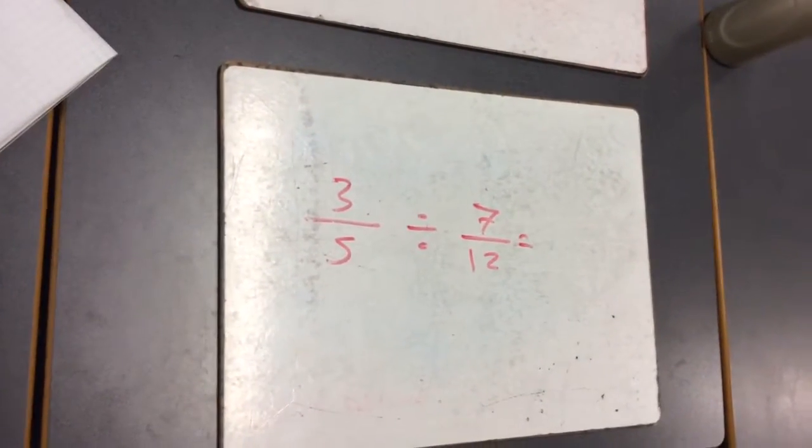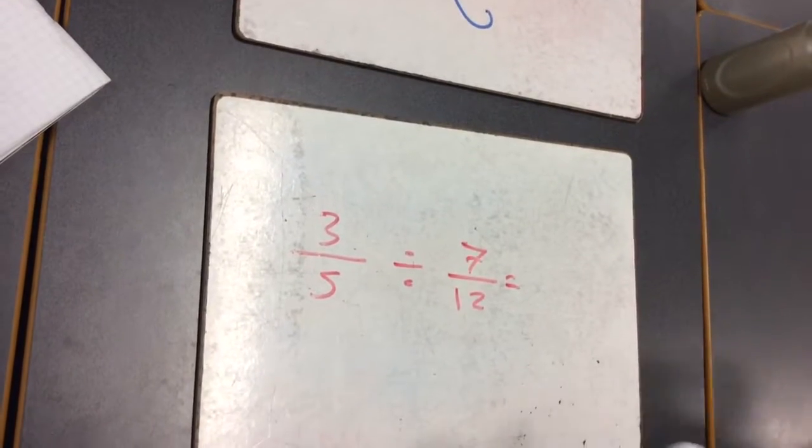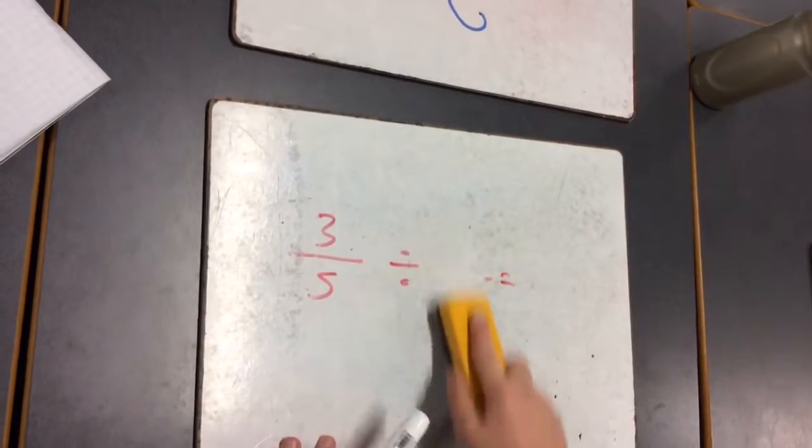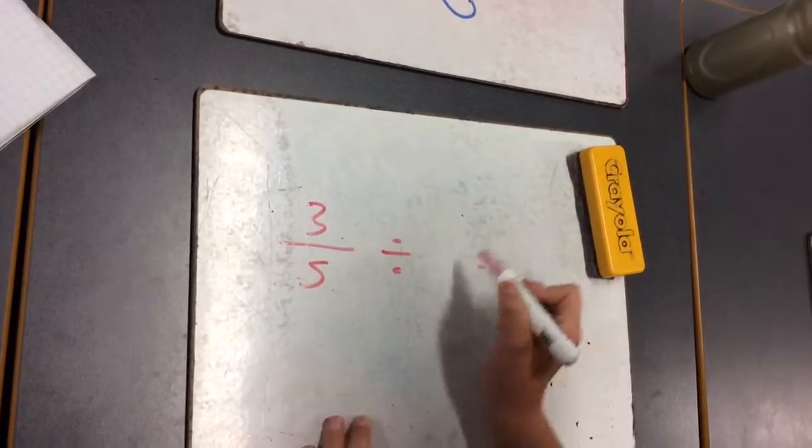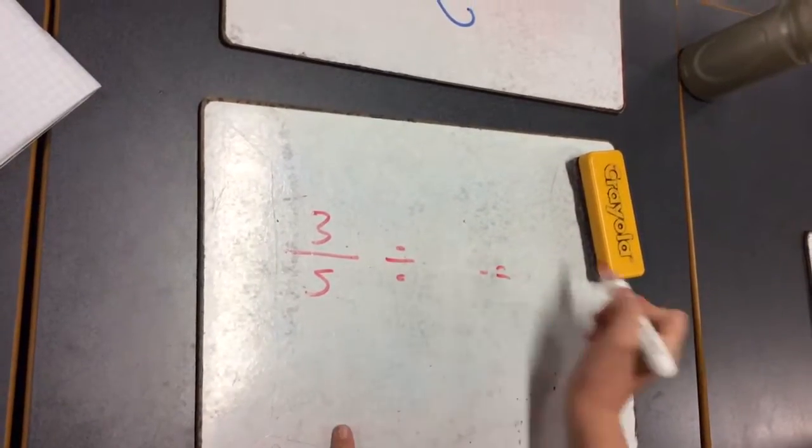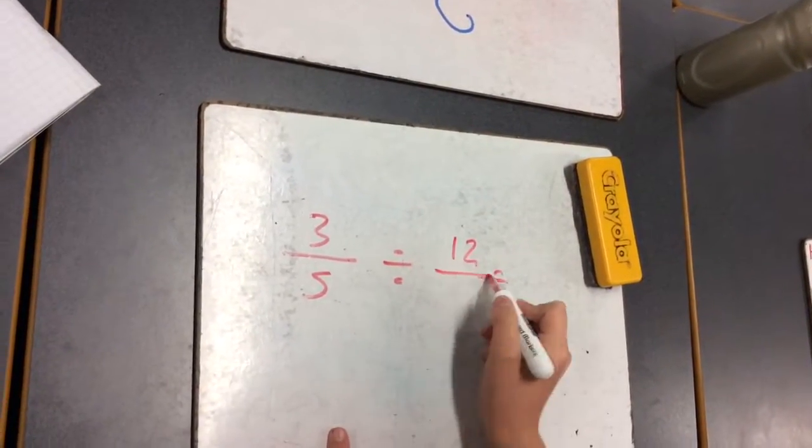What we do is we rub this out and it was 7 twelfths and we change it to 12 sevenths.